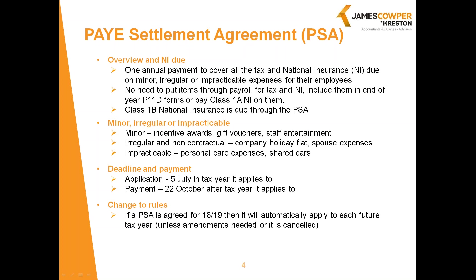The amount of tax and National Insurance depends on the marginal rates of tax that each employee provided with those benefits actually pays, and the tax is worked out on a grossed-up basis. There's no employee NI, so there's a saving there — the net cost including VAT is grossed up for tax, and the employer pays Class 1B National Insurance on the gross benefit at 13.8%. Don't forget there are different rates for Scottish taxpayers, defined by where the employee has their main residence, not where they work.